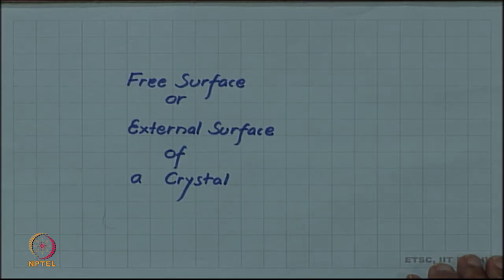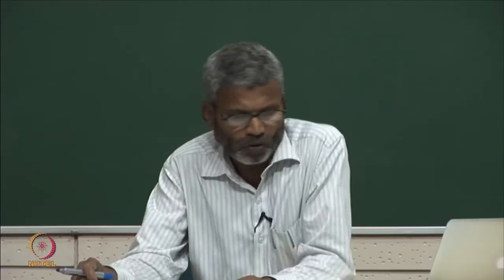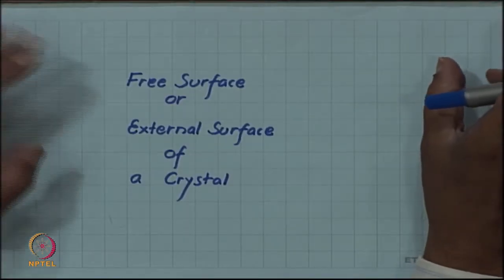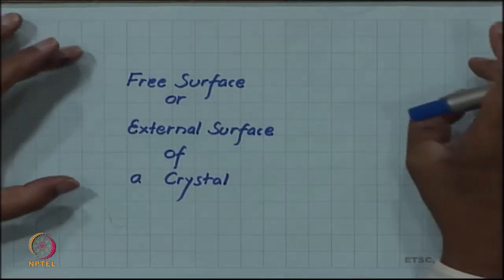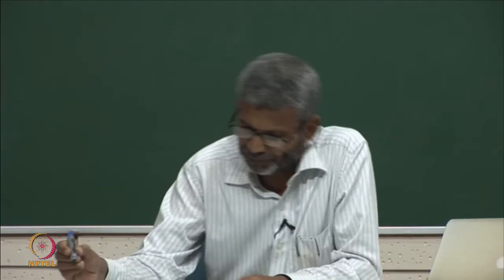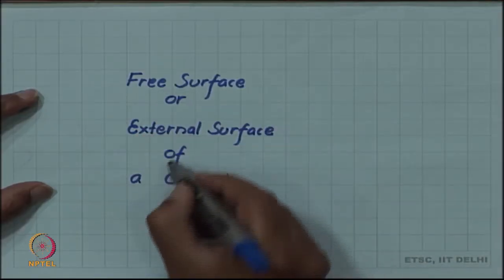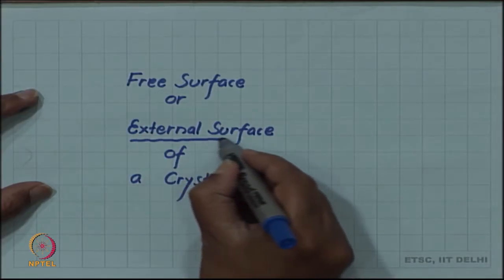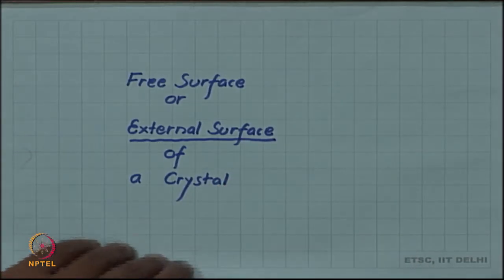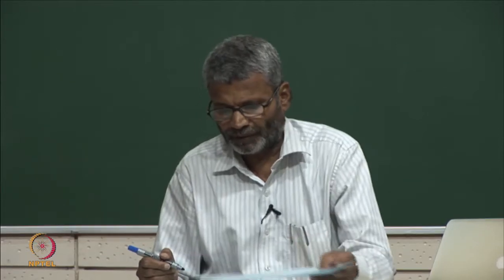We have started our discussion on surfaces and interfaces in crystalline solids. Now we will take a particular kind of surface which is always present in all crystals, and that is its external surface. Since all crystals will be finite, there will always be an external surface of that crystal, and this external surface is itself a kind of defect.